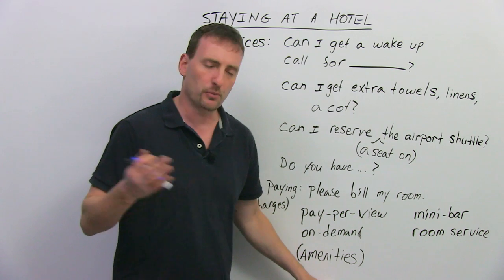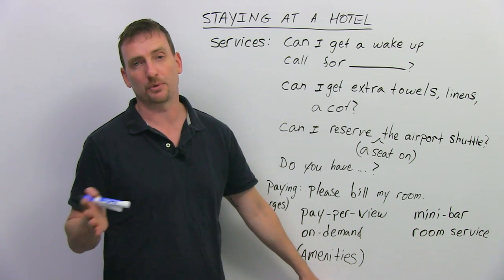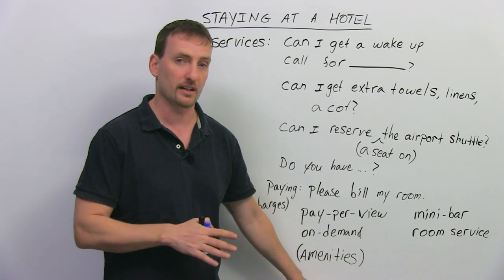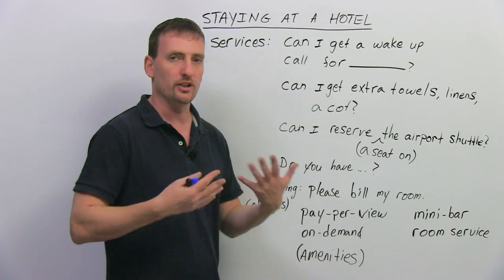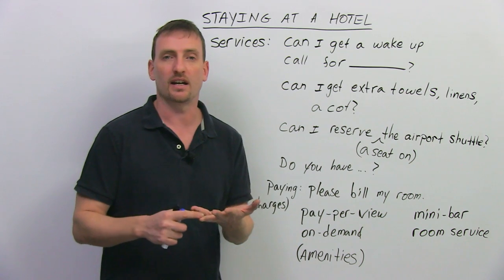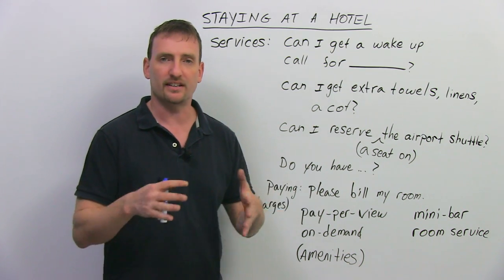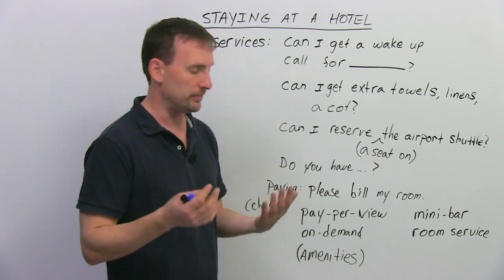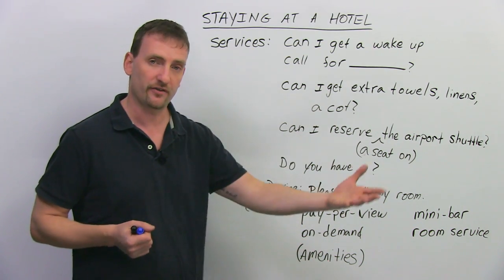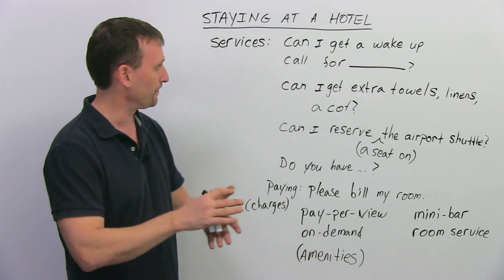In some hotels you have to pay extra for the amenities. Amenities are facilities, things that you can use. A gym, a sauna, a spa. All of these things are called amenities, they're extras, and you may have to pay for them, so find out before then. Do I have to pay for this? It's very straightforward.